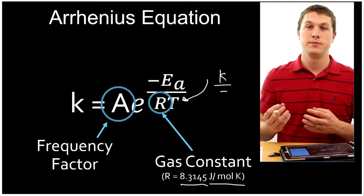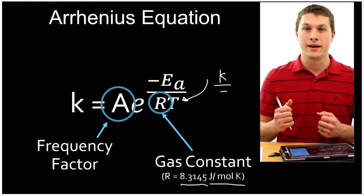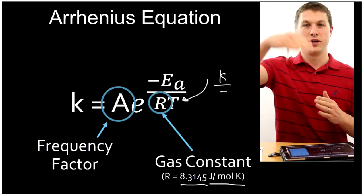That frequency factor, like I said, is the number of times the reaction tries to go forward. So you can basically think about it like running up a hill. You might run as fast as you can up a hill, and if you have enough energy, you get over it.